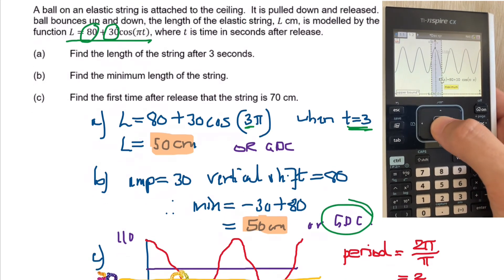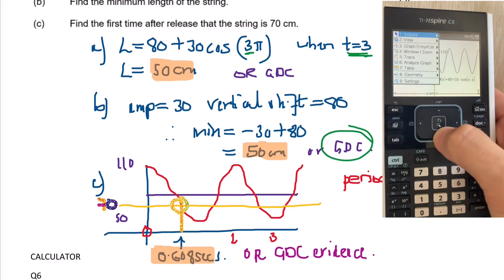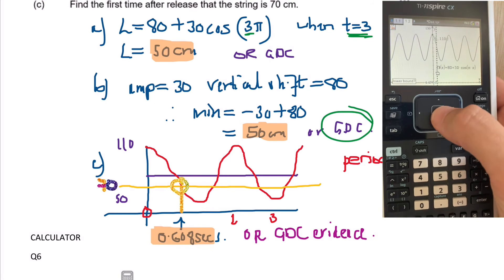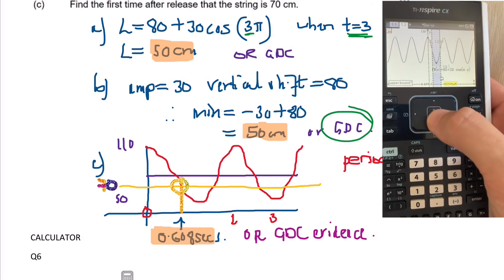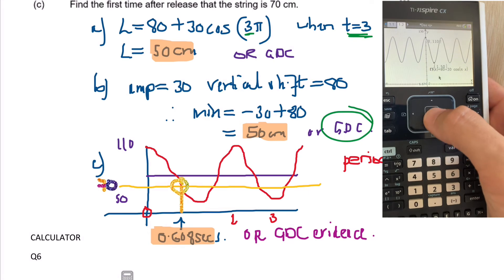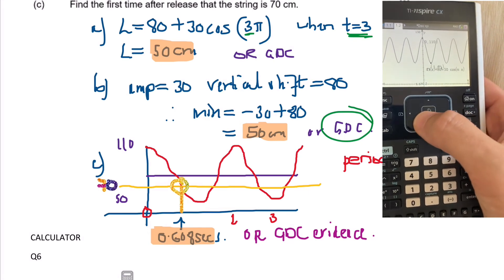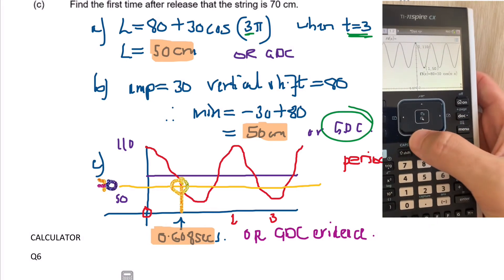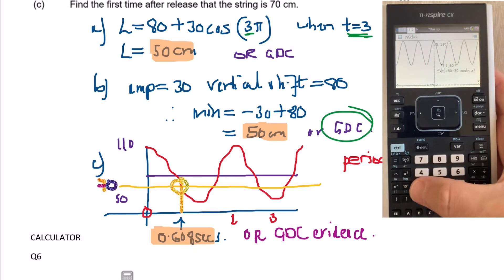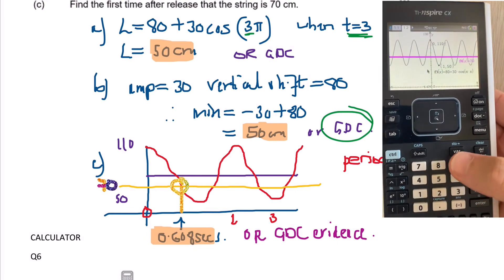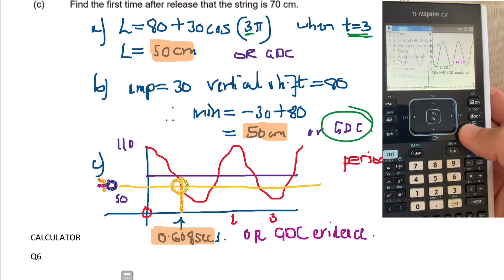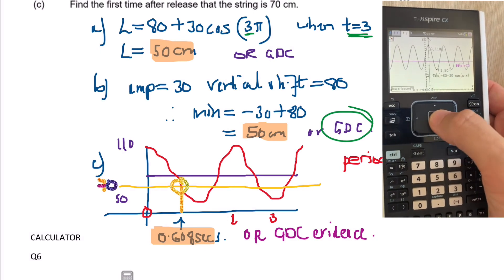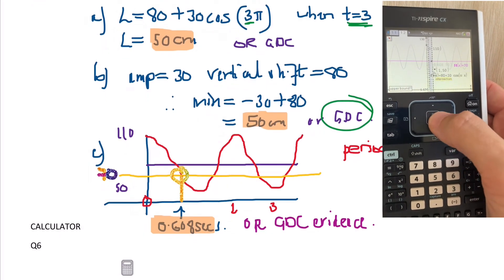But again, if you show me GDC evidence, that's fine. And then find the first time after release that the string is 70. Well again GDC, but this time you need to put in 70 because you're trying to find an x coordinate. So 70 is the y coordinate. So you should get a horizontal line going across your graph, and you just need to find the first intersection point with the graph in the horizontal line when y is equal to 70. And then when you analyze your graph, you get 0.608. You could have drawn a sketch or again GDC picture evidence.